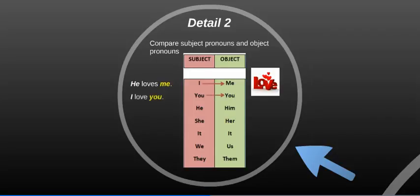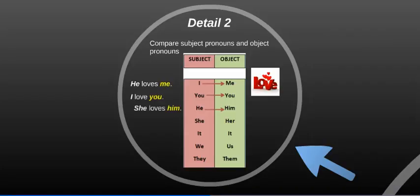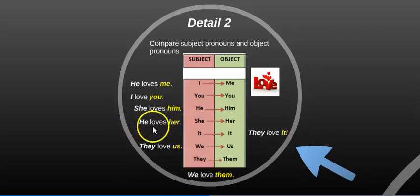For you, I love you. For he, she loves him. He loves her. They love it. They love us. We love them. So instead of saying he loves she, we say he loves her. They love us. We love them.